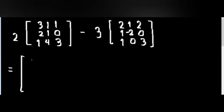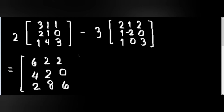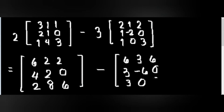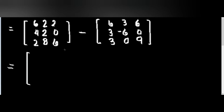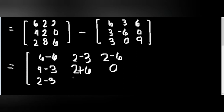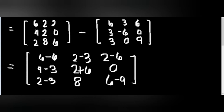For this solution, we are going to multiply 2 to matrix A: 3, 1, 1, 2, 1, 0, and 1, 4, 3, minus 3 multiplied by matrix B: 2, 1, 2, 1, 2, 0, and 1, 0, 3. Multiplying 2 to matrix A and then 3 to matrix B, we combine them. For the first row: 6 minus 6, 2 minus 3, and 2 minus 6. For the second row: 4 minus 3, 2 minus negative 6 is 2 plus 6, and 0 minus 0 is 0. And for the third row: 2 minus 3, 8 minus 0 is 8, and 6 minus 9.